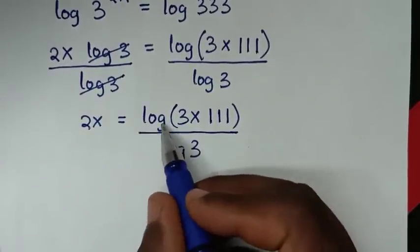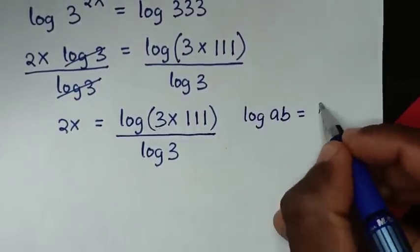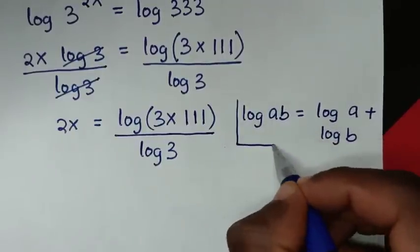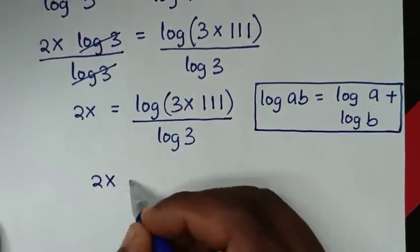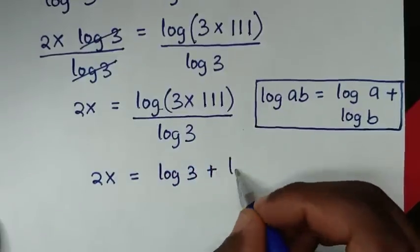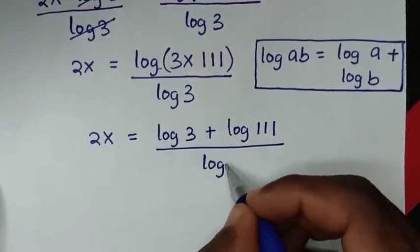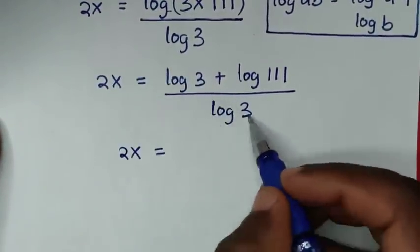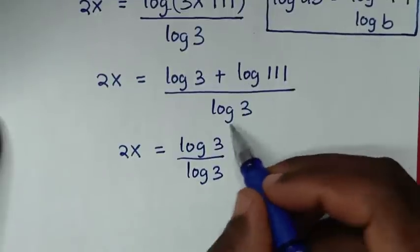Then in the next step, log of 3 times 111 is in the form of log of a times b, which is equal to log of a plus log of b. So it will be 2x is equal to log of 3 plus log of 111, all divided by log of 3. Then it will be 2x is equal to log of 3 over log of 3, then plus log of 111 over log of 3.